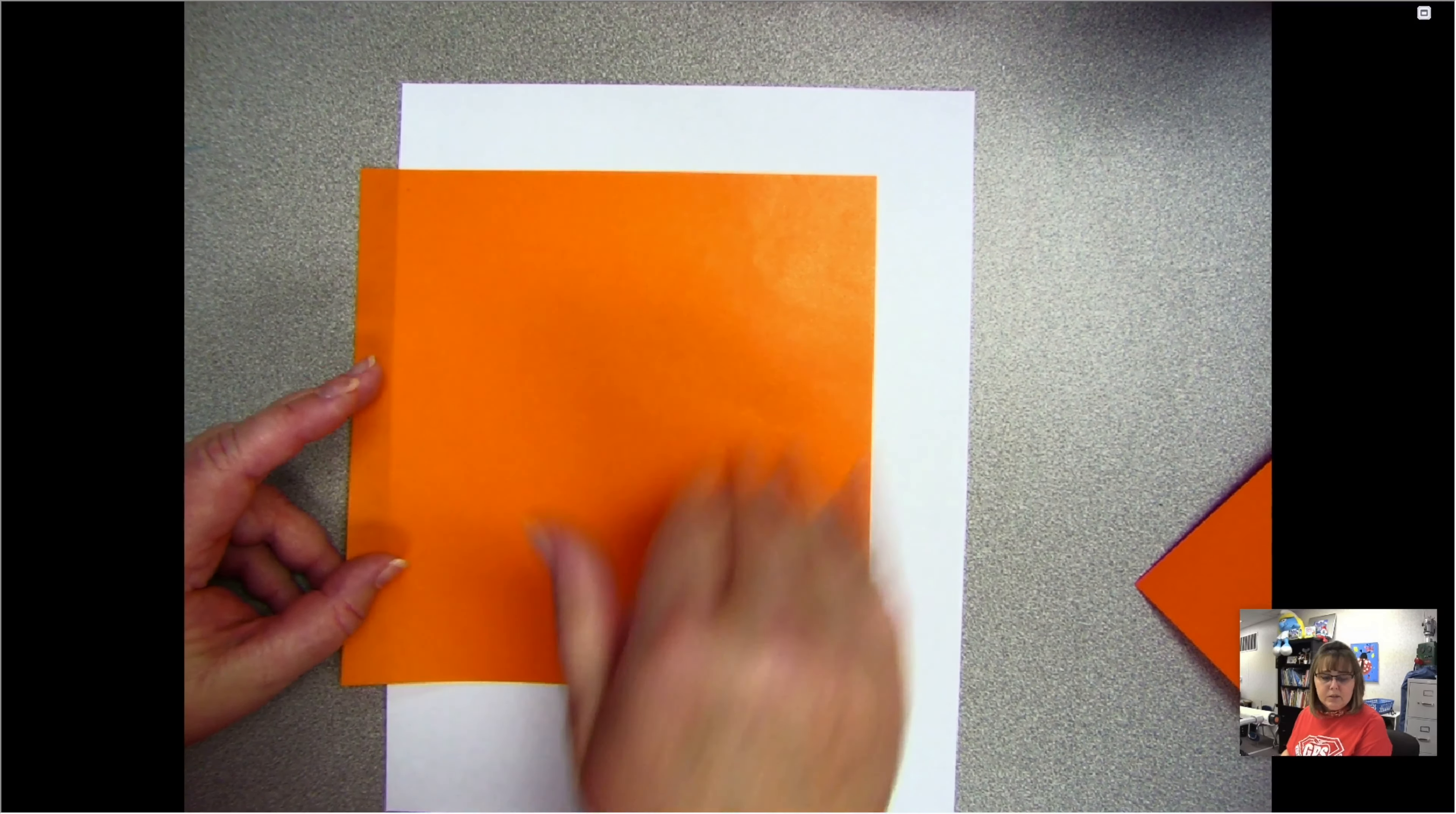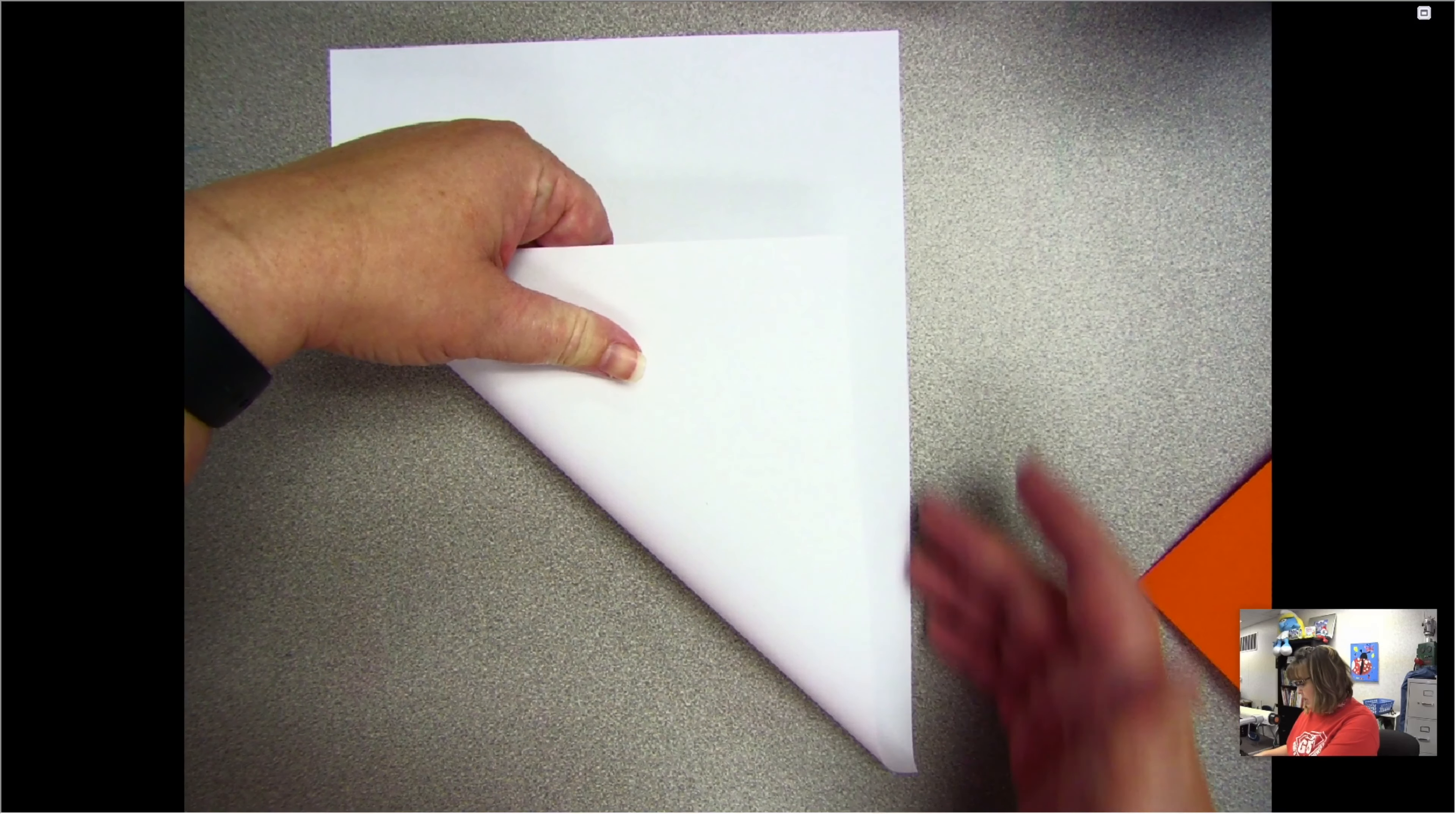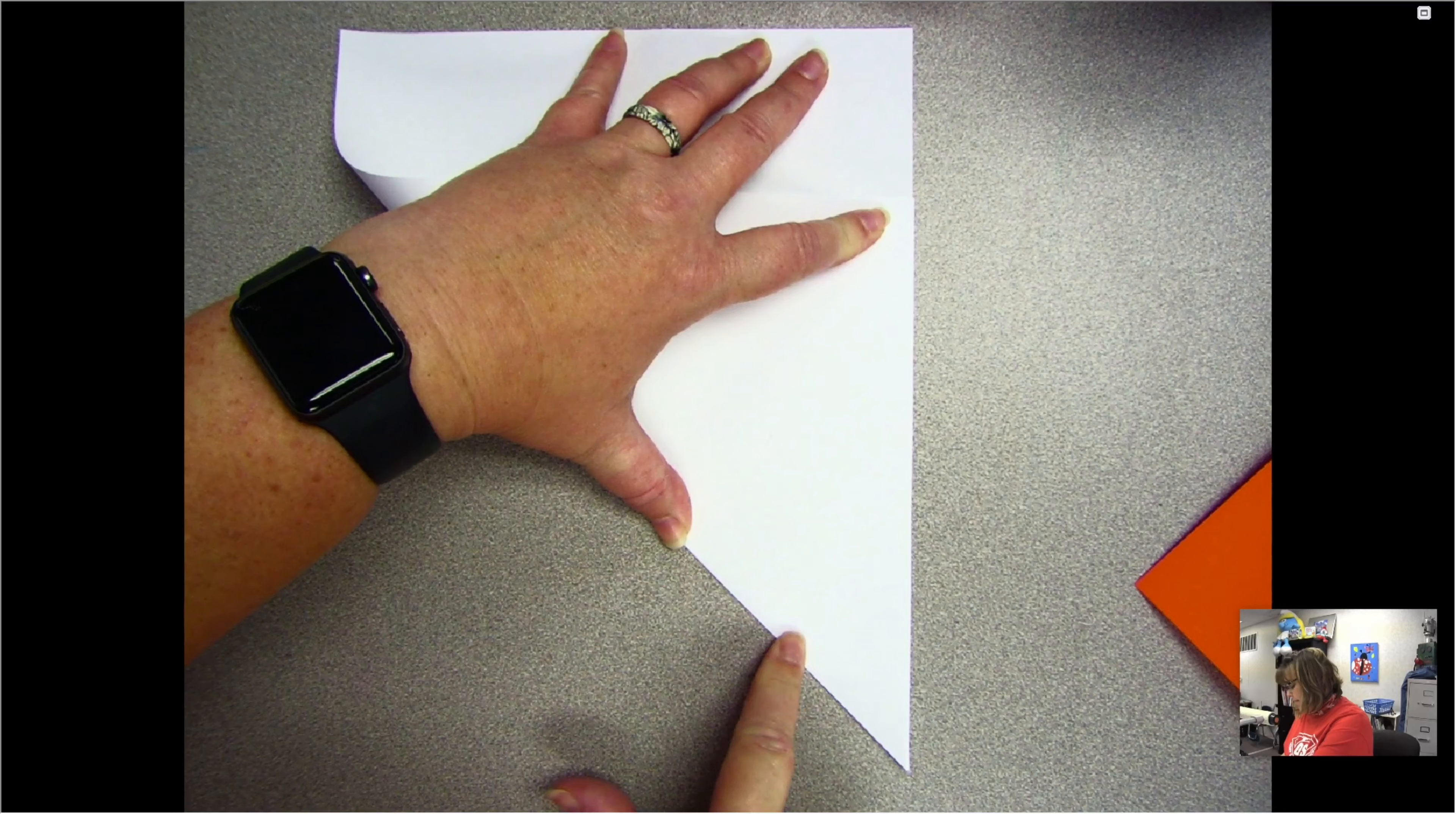Origami paper is already cut into a square. You should always start origami with a square. Since this is not a square, I'm going to show you how to cut it into a square. You take this edge and line it up with this edge, and make sure to get a point, a perfect or as close to a perfect point as you can at the bottom, and then press it down flat.